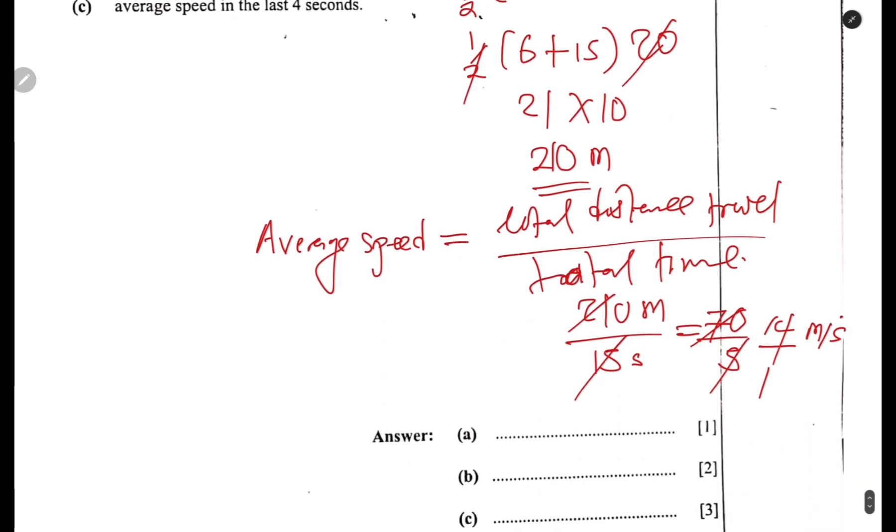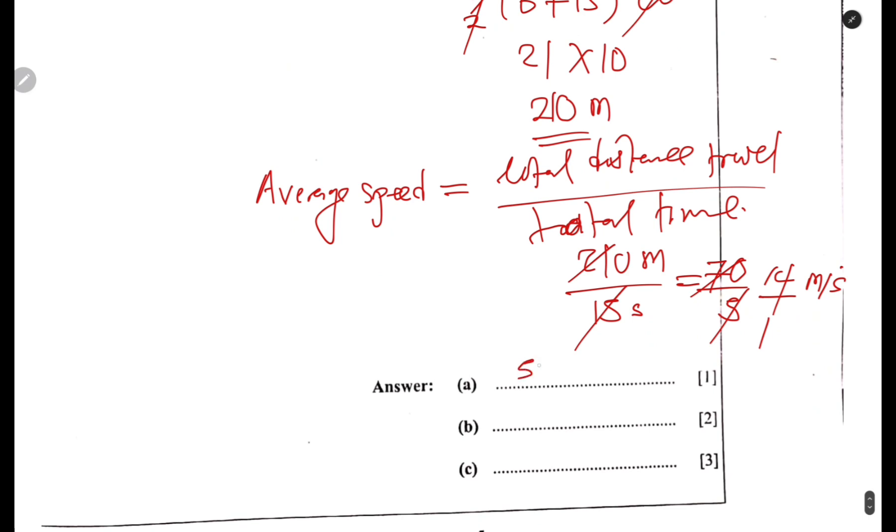So the first part, putting the answers: part (a) is 5 meters per second squared. Part (b), total distance, we found 210 meters. And part (c), we found 14 meters per second. That is how you answer this question. See you in the next one.